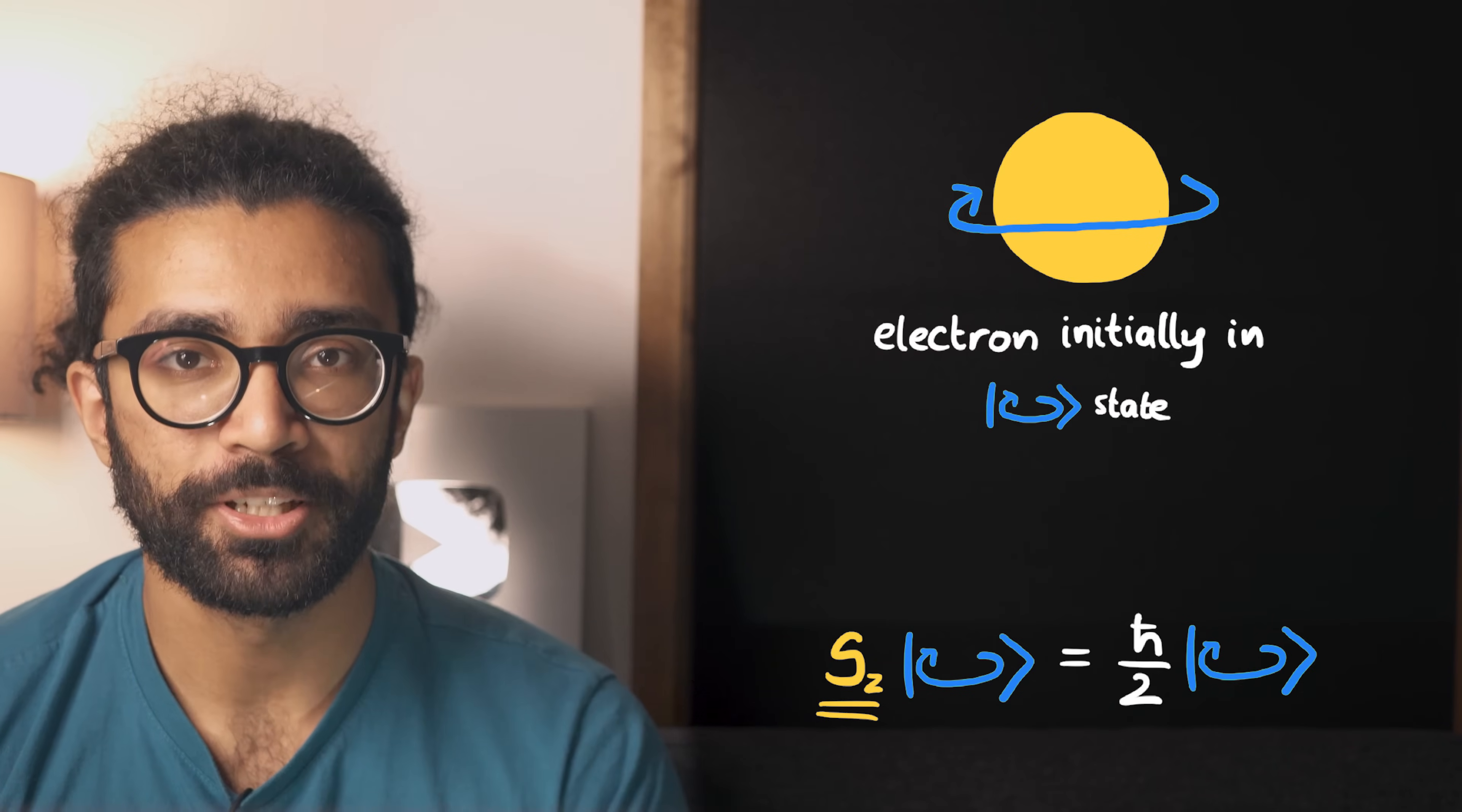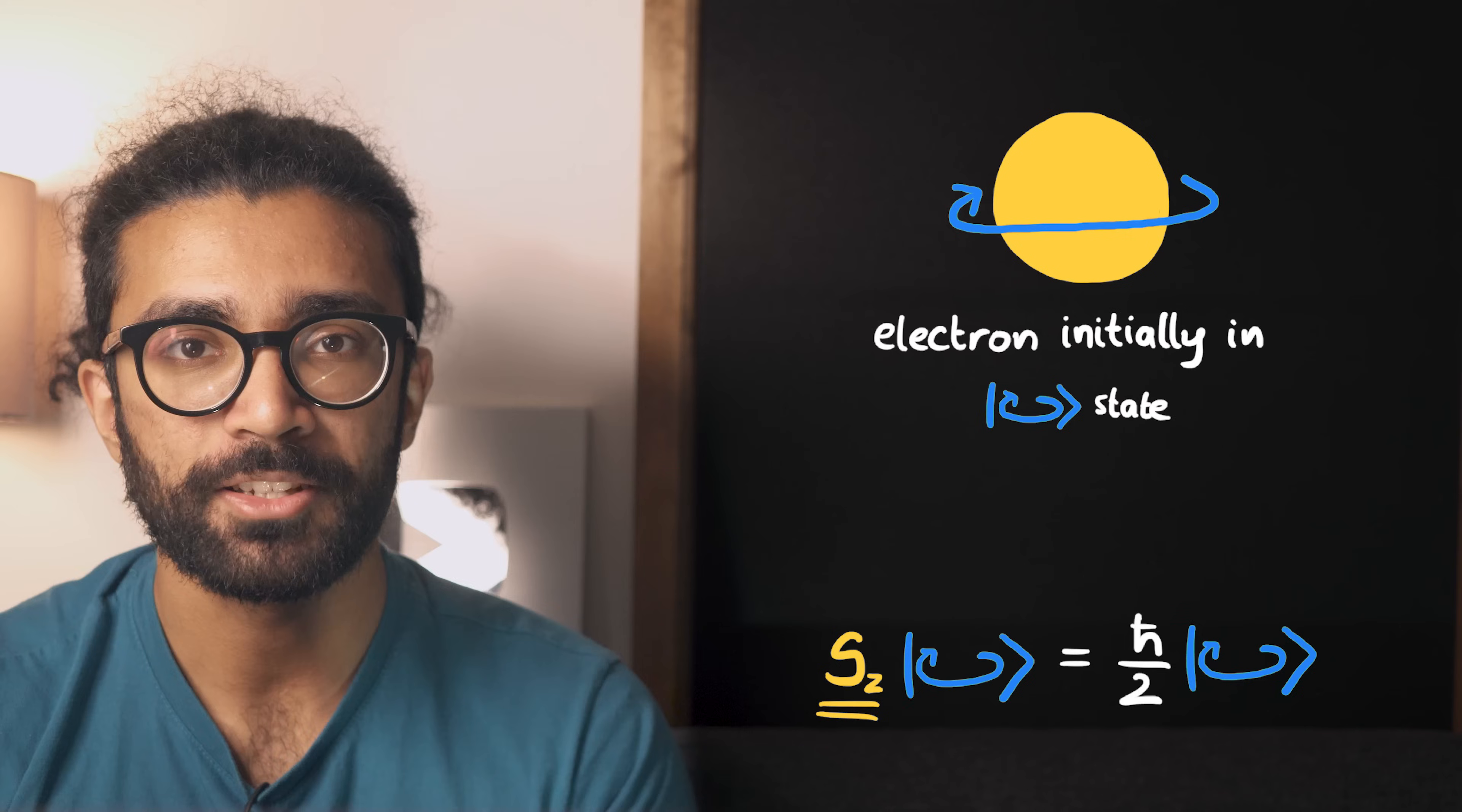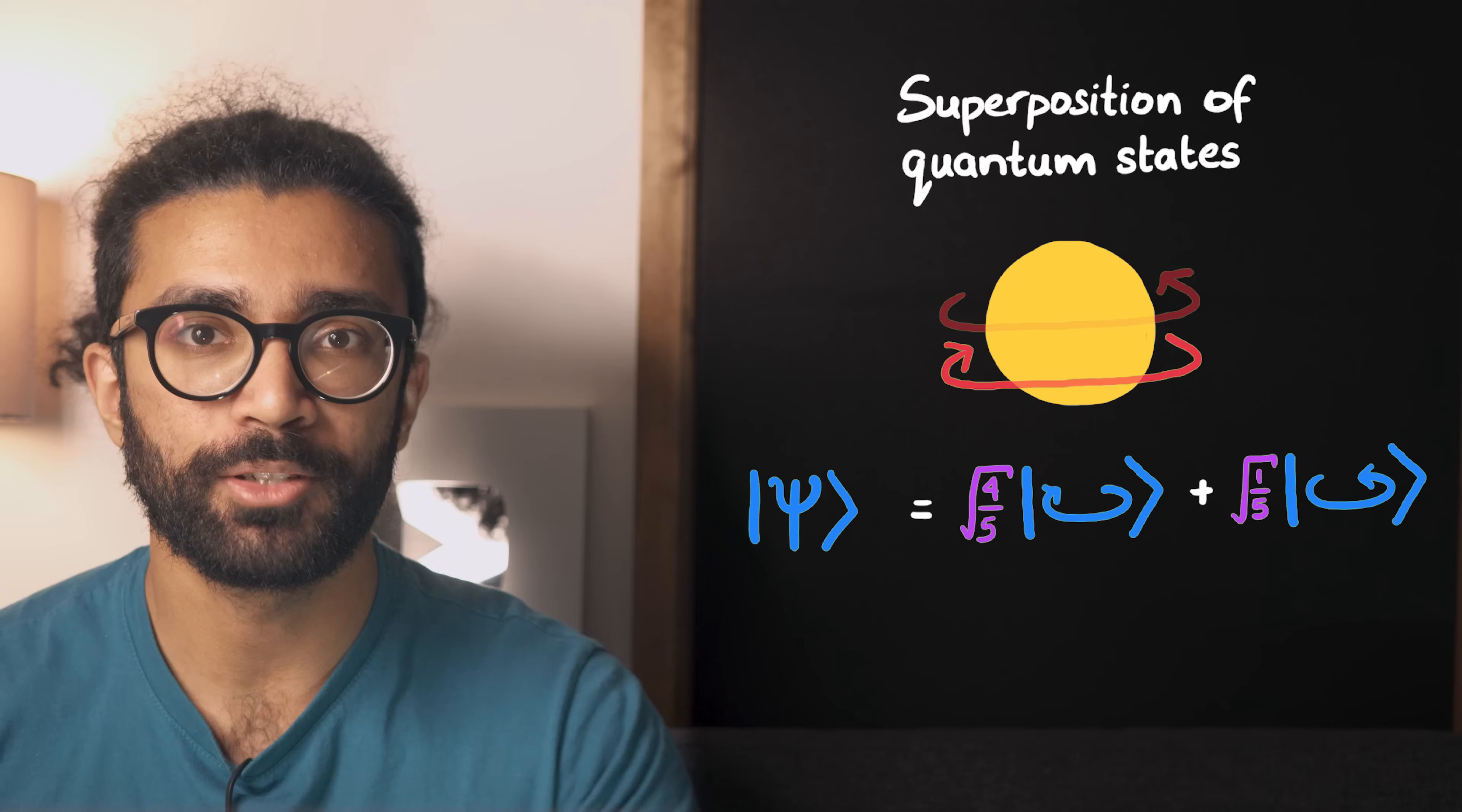Anytime we make a measurement on a system that is in an eigenstate of the measurement we want to make, the eigenvalue equation becomes important. And even if our system is not in an eigenstate, the fact is that we can write any possible state that the system could be in as a combination of the eigenstates of any measurement we can think of.